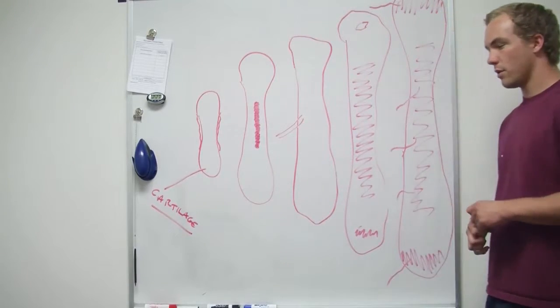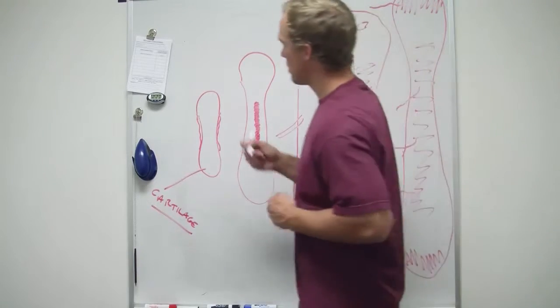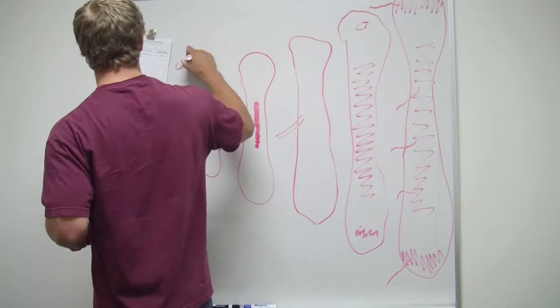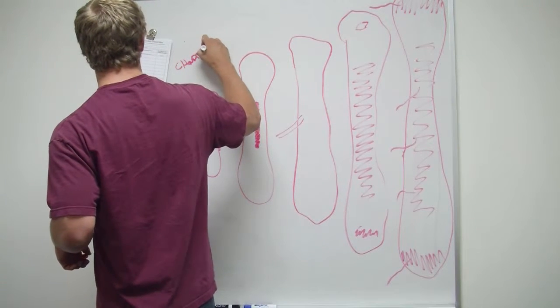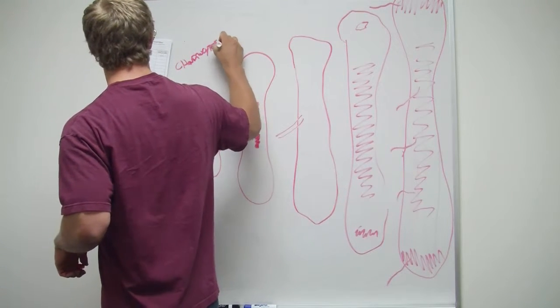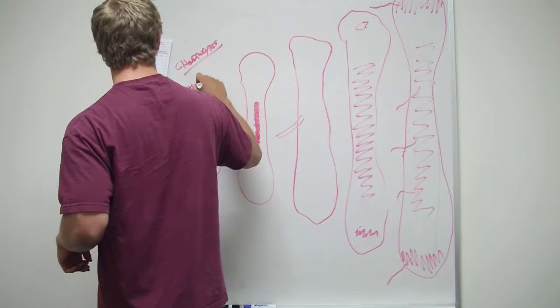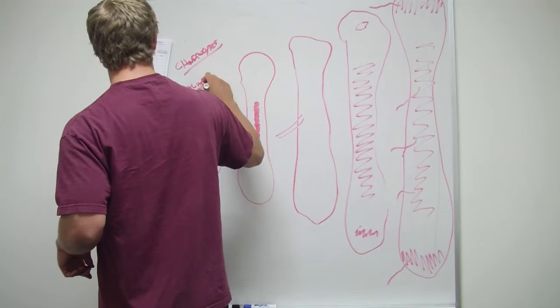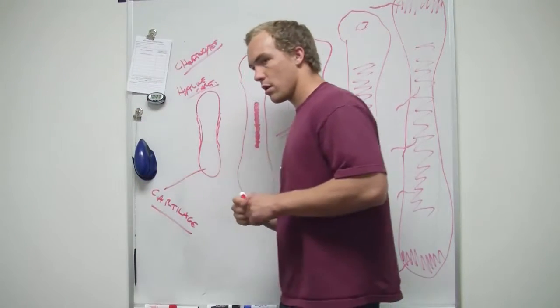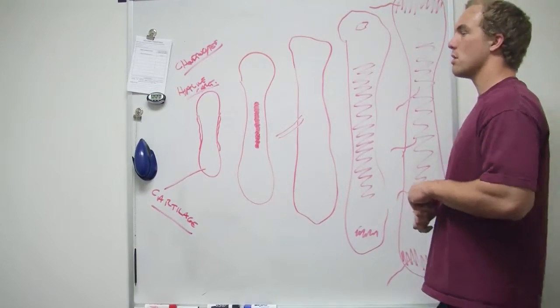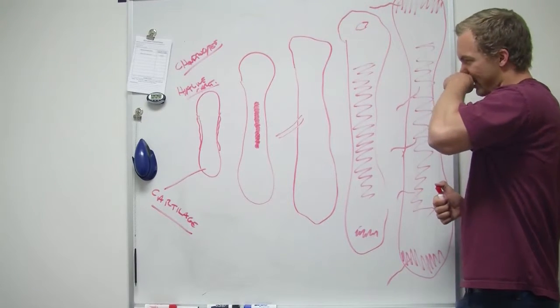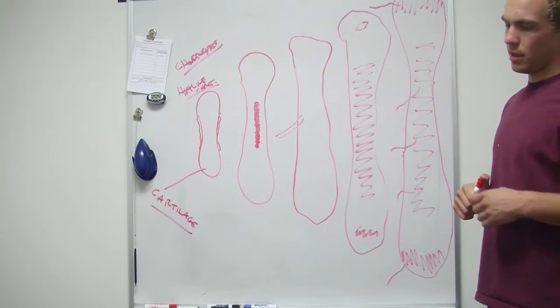Cartilage, right? And so chondrocytes lay down cartilage, so you have what's called a hyaline cartilage model. You're a hyaline cartilage model, it lays down cartilage.